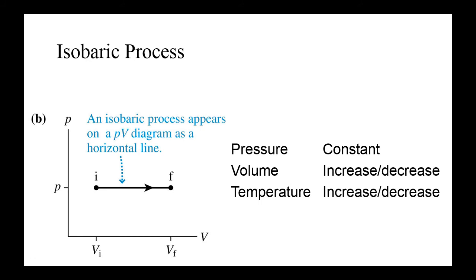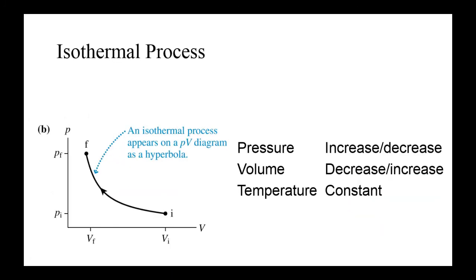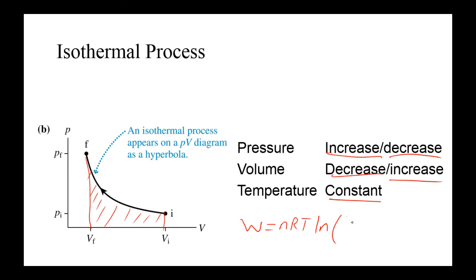For an isobaric process, we have constant pressure. When volume increases, temperature also increases; when volume decreases, temperature decreases — they are directly related. The work is the area under the curve, equal to P(V_final - V_initial). For an isothermal process, we have constant temperature. When pressure increases, volume decreases, and vice versa — they are inversely related. The work done for an ideal gas in an isothermal process is W = nRT·ln(V2/V1).